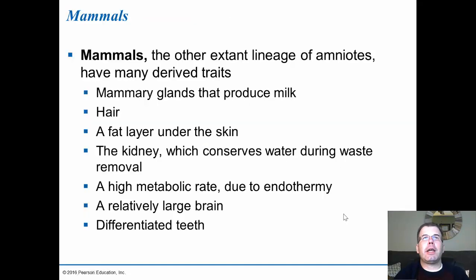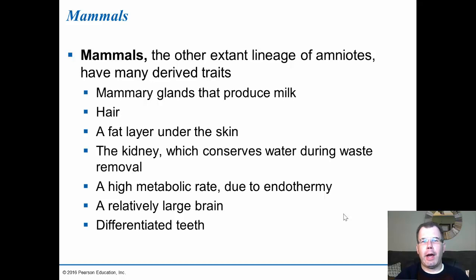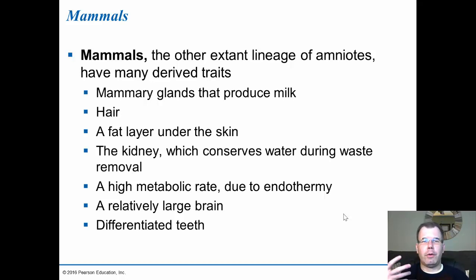The last major group to evolve was the mammals. They have many derived traits, including mammary glands that produce milk (which is where they get their name), hair or fur, a fat layer under the skin that keeps them warm, the kidney that conserves water (we'll talk about this in chapter 32), a high metabolic rate because of endothermy — they burn calories well to maintain body temperature — a relatively large brain, and differentiated teeth. Carnivores and herbivores have different types of teeth, and omnivores have a mixture of both.